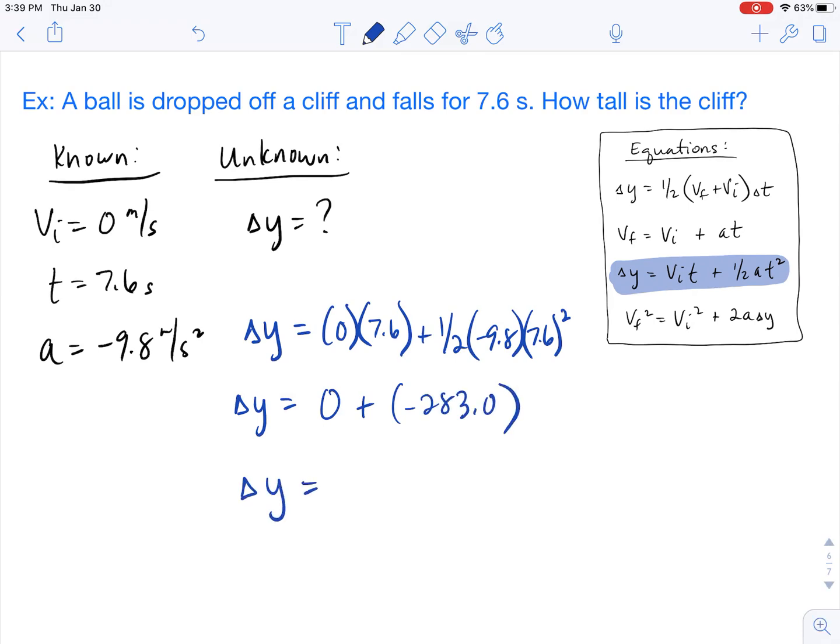So our delta y comes out to be negative 283 meters. The reason why it's negative is because we're assuming that the ball is falling downwards, and downward is a negative direction. So you could also say that the cliff itself is positive 283 meters. All right, so I hope that this video has helped you solve your own free fall problem.